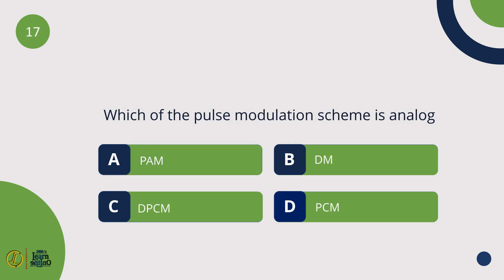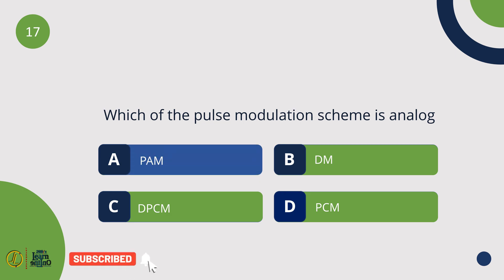Which of the pulse modulation schemes is analog? PAM — Pulse Amplitude Modulation. All other schemes are digital.